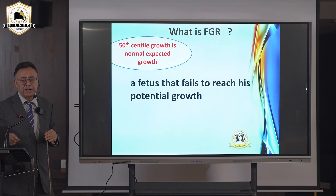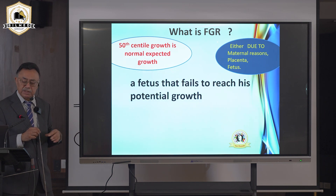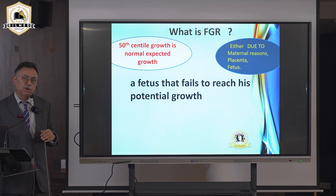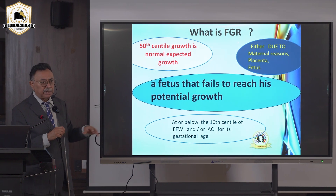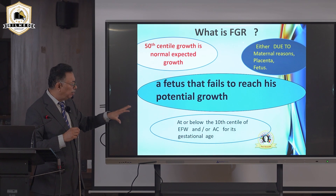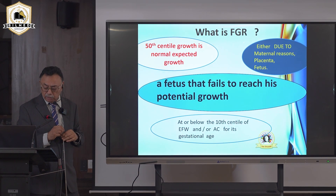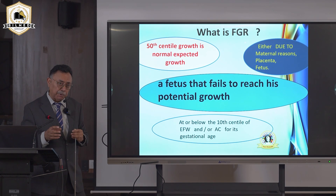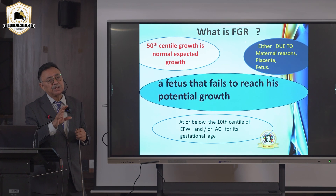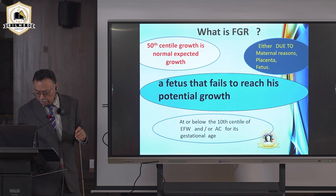Fetal growth retardation means a fetus failing to reach 50% of its normal expected growth. It may be due to maternal, placental, or fetal causes and is best measured by abdominal circumference less than the 10th centile or estimated fetal weight. Abdominal circumference and estimated fetal weight are the two best parameters — not BPD or femur length.